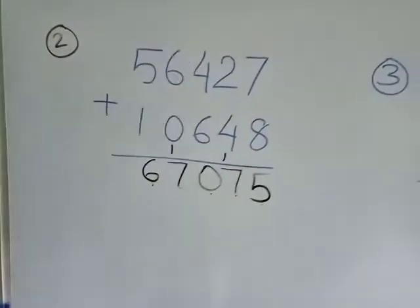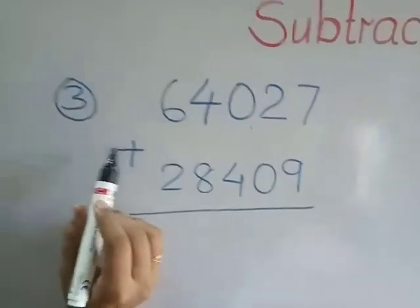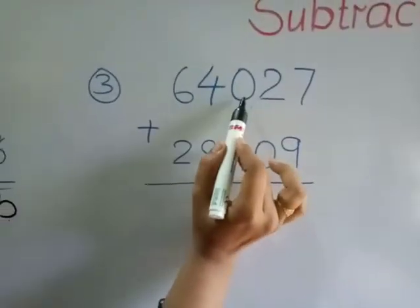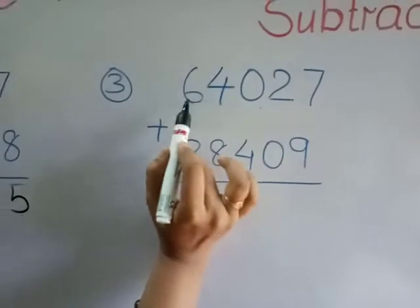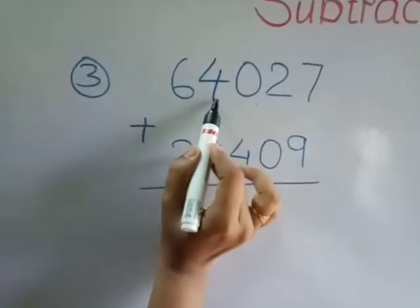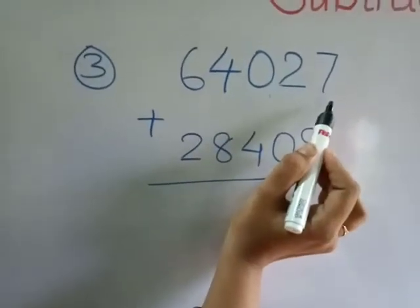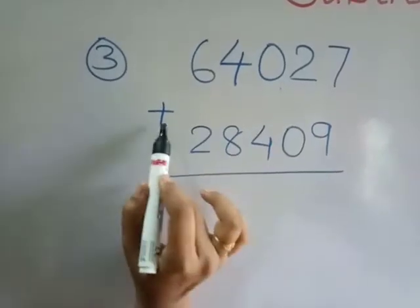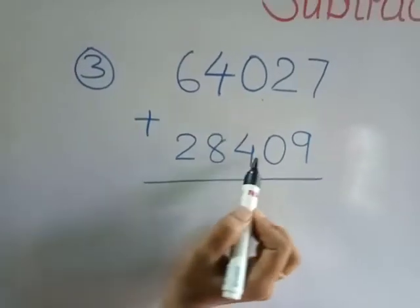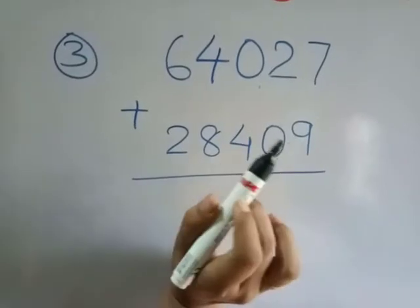Now look at the next question — question number three. Unit, tens, hundred, thousand and ten thousand. Sixty-four thousand, twenty-seven plus twenty-eight thousand, four hundred and nine.